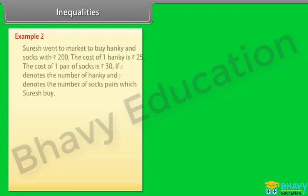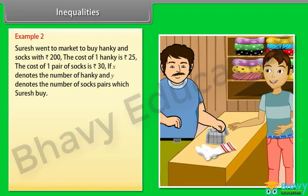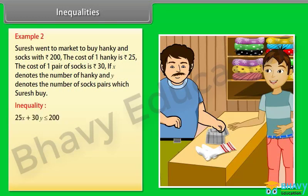Example 2: Suresh went to market to buy hanky and socks with rupees 200. The cost of one hanky is rupees 25. The cost of one pair of socks is rupees 30. If x denotes the number of socks pairs which Suresh buys, then we can represent the above statement in inequality form as 25x plus 30y less than or equal to 200. It is a linear inequality of two variables.